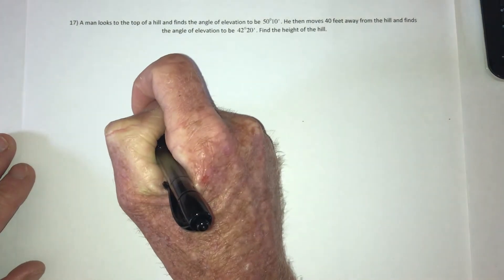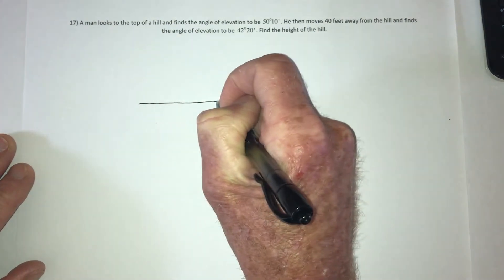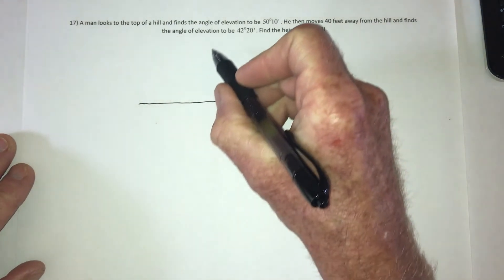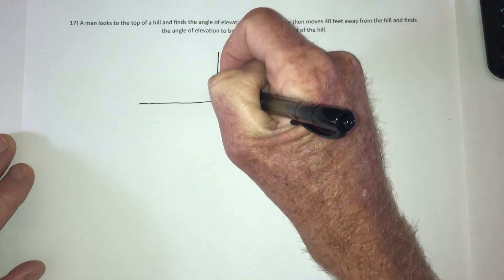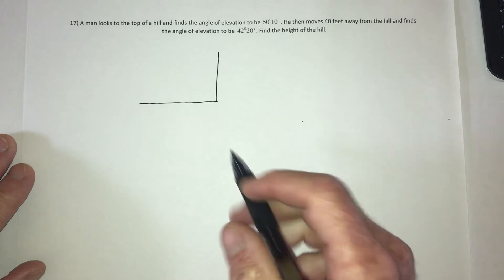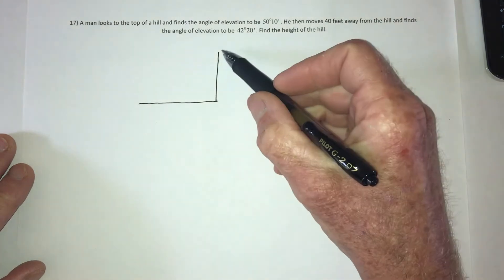So let's say that this is the ground, and then there's this hill, and you could actually draw a hill, or you could just put a straight line and say that's going from the horizontal to the top of the hill.